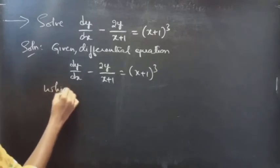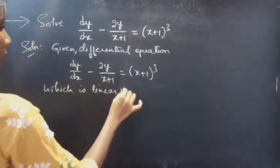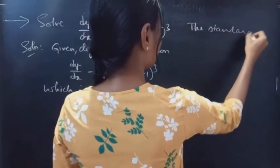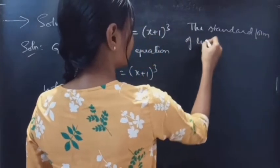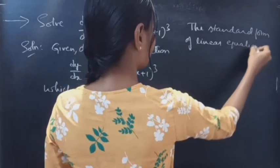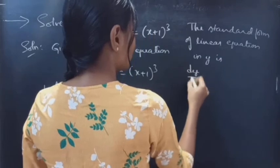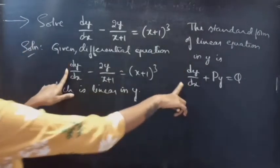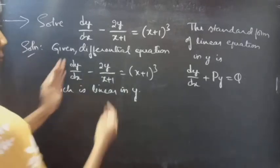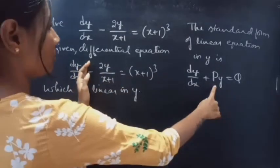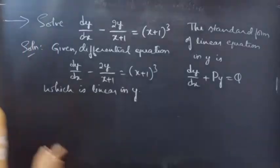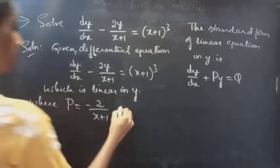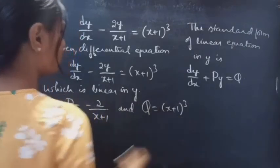This equation is linear in y. We know that the standard form of a linear equation in y is dy/dx + P·y = Q. By comparing, we get P equals minus 2/(x+1) and Q equals (x+1)³.